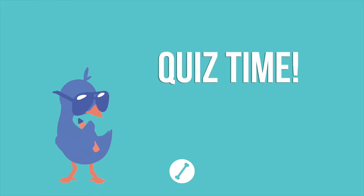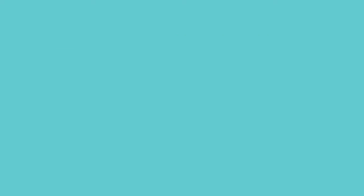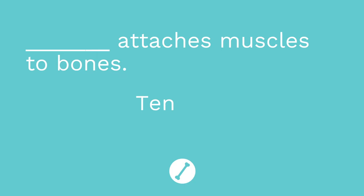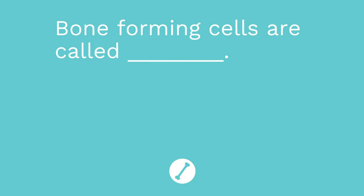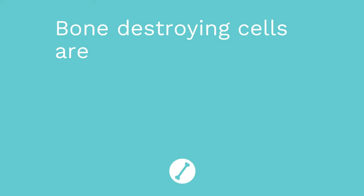It's time for your first musculoskeletal system quiz. I have four fill-in-the-blank questions for you. Question one: blank attaches bones to other bones. The answer is ligaments. Question two: blank attaches muscles to bones. The answer is tendons. Question three: bone-forming cells are called blank. The answer is osteoclasts.